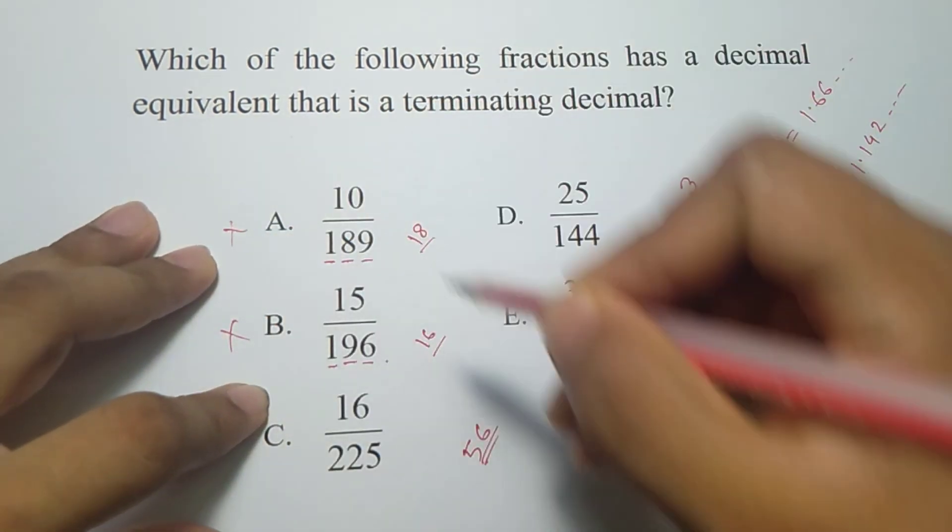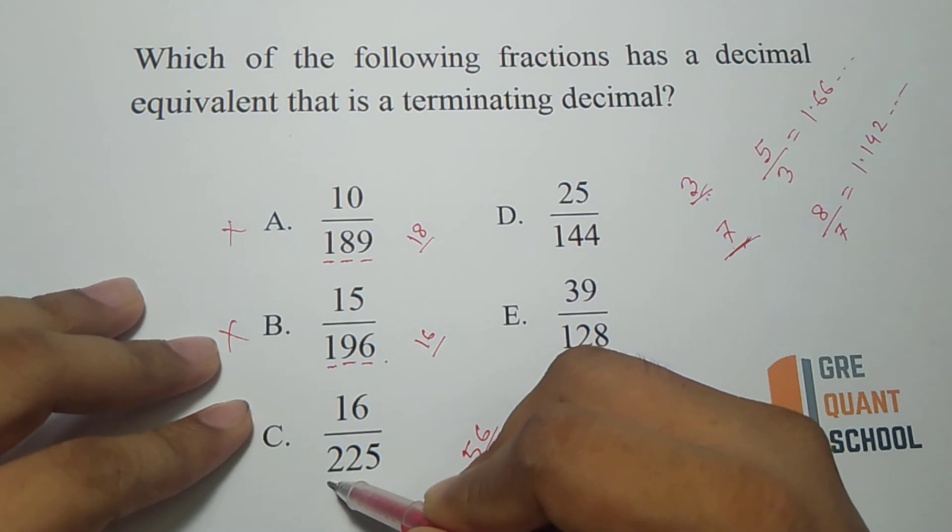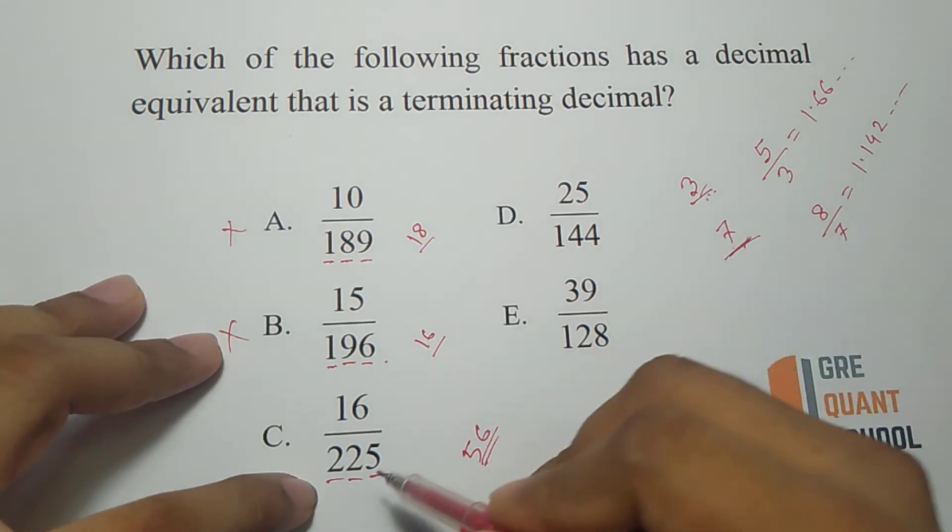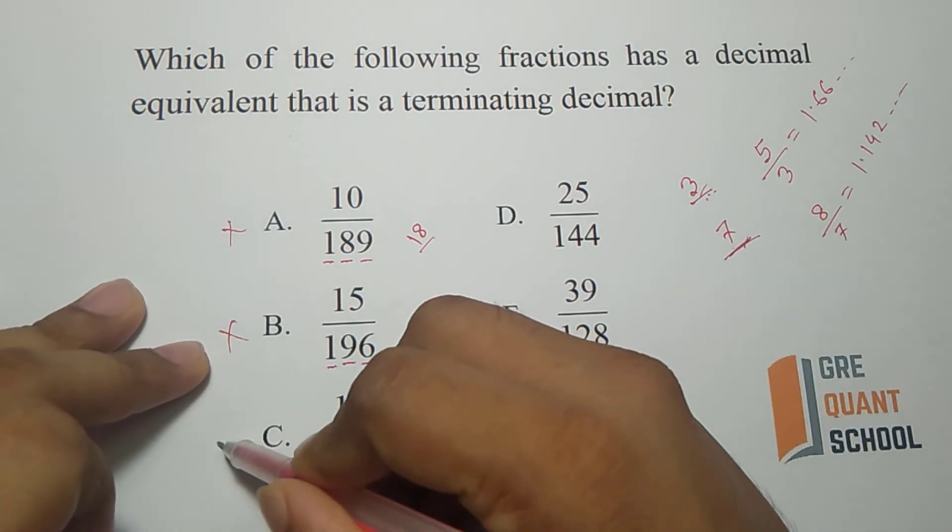Here 2 plus 2, 4 plus 5, 9, it's divisible by 3 so there is a 3, it's non-terminating.